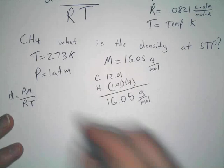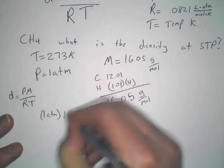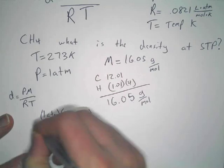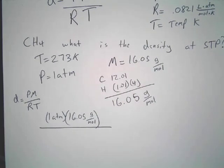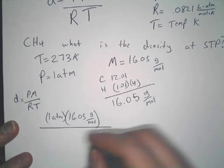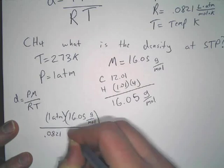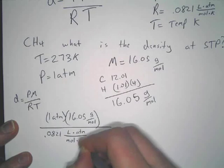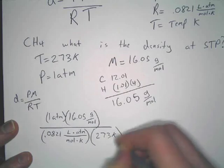So all you do is simply say, your pressure is one atmosphere. Well what do we, so what do we write as a unit when we solve it when we get density? You'll see, I'm going to show you. So one atmosphere, 16.05 grams per mole, and then our R value is 0.0821 liters times atmospheres divided by moles times Kelvin.